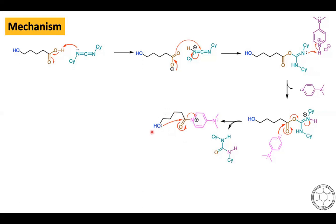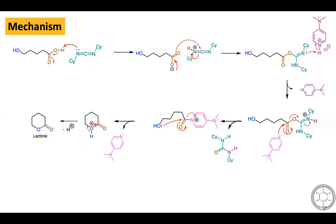The acylated DMAP contains a hydroxyl group whose oxygen lone pair readily attacks the carbonyl carbon, kicking off DMAP as a byproduct and generating a protonated lactone intermediate. This intermediate then loses H⁺ to generate the corresponding lactone product.